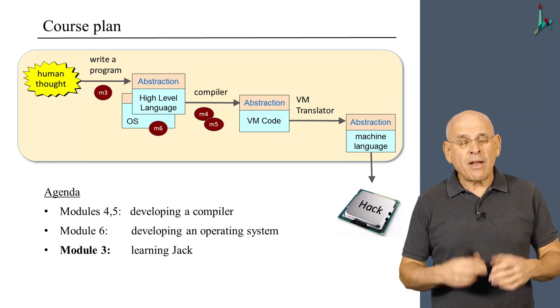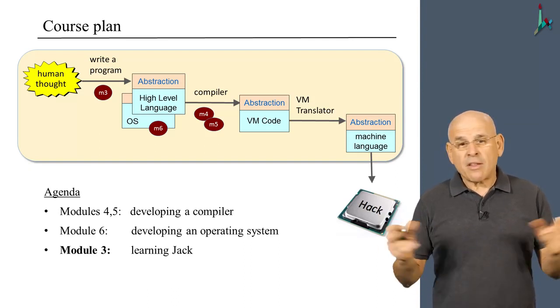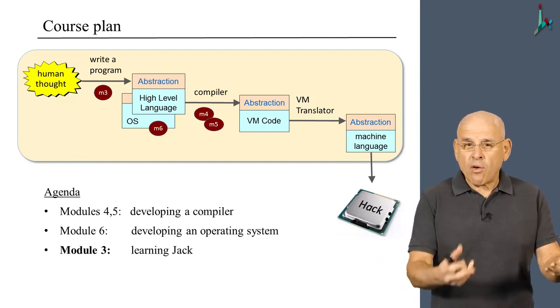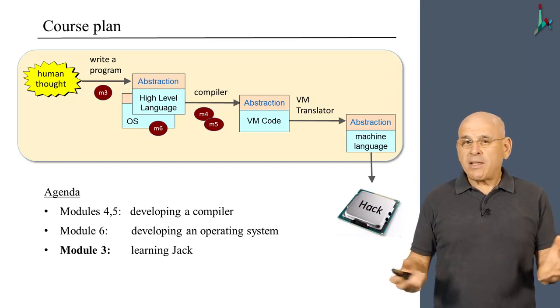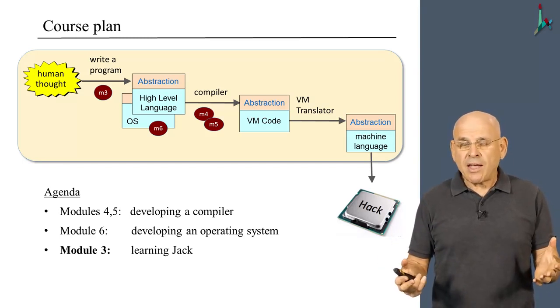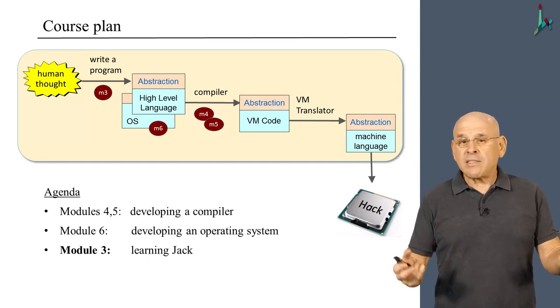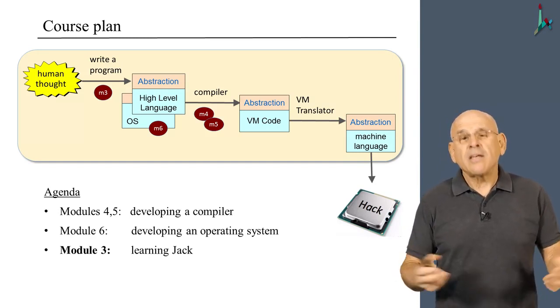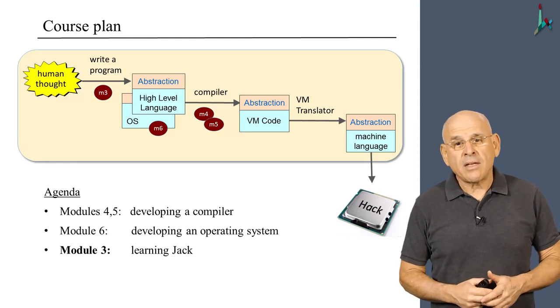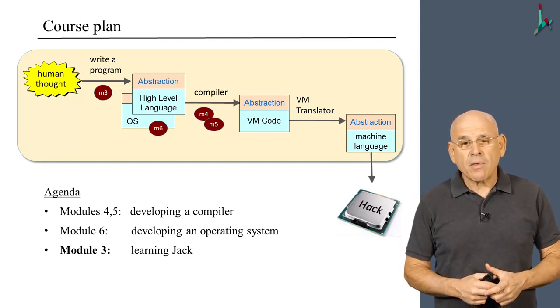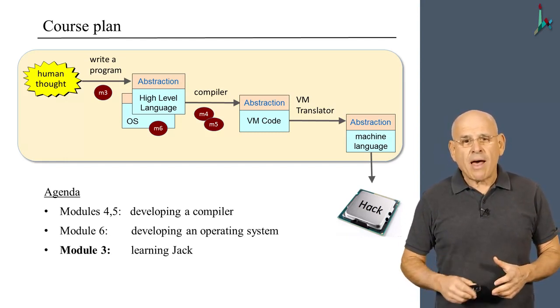because Jack is going to play a dominant role in everything that we do from now on. We're going to write a Jack compiler, and also the operating system that accompanies Jack is going to be written in Jack itself. Just like the operating system which accompanies C, Unix is written in the C programming language. All right, so with that in mind,